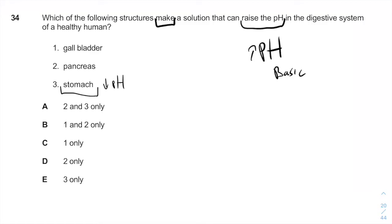The gallbladder doesn't make the bile acids, the liver does. And anyway, it will decrease the pH.